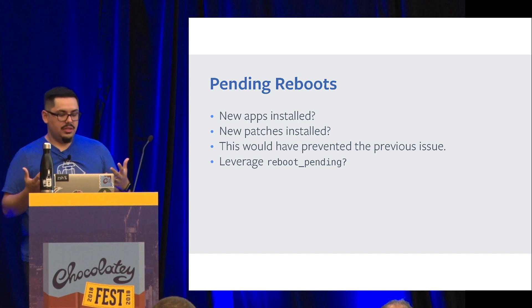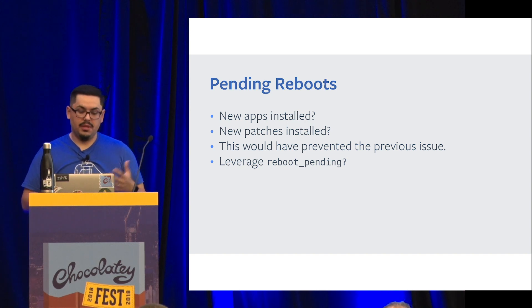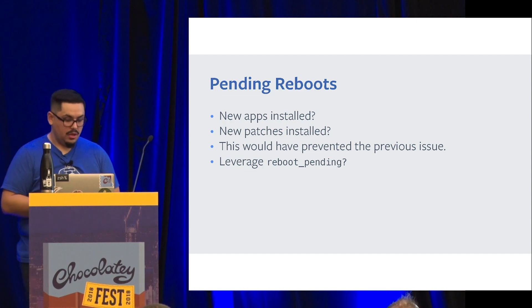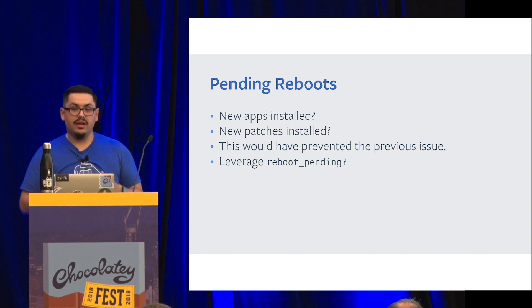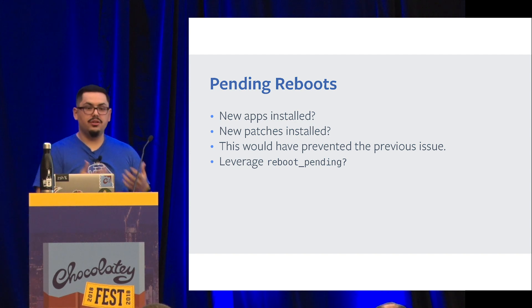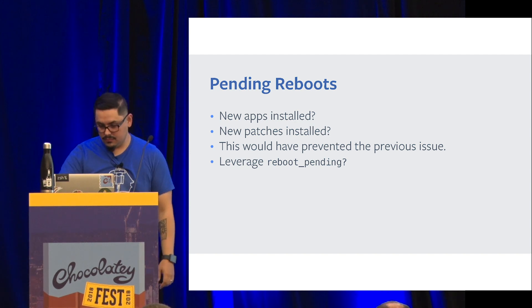So how do we know that machines need a reboot? Chef actually offers something really cool called reboot pending, which is a function for the node. Underneath the hood, it's actually looking for a couple of registry settings. Funny enough, it actually also works for Ubuntu. So now we can look at the machine and understand if the machine needs a reboot. Let's look at some code.